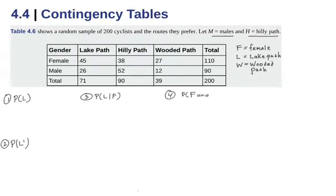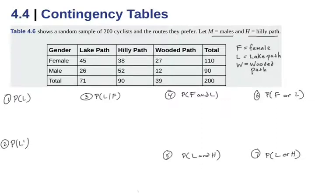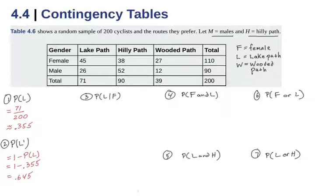The probability that they take the lake path is 71 out of 200 — the total for the lake path is 71 and our grand total is 200. For the complement, we don't have to count all the other groups; we can use the idea of the complement, 1 minus P(L). Subtracting those two gives us 0.645. This is one case where the formula gives us a useful shortcut.